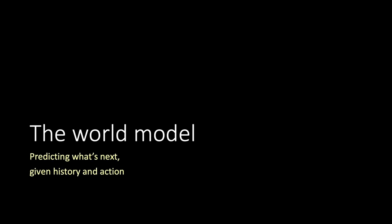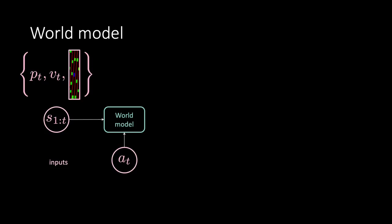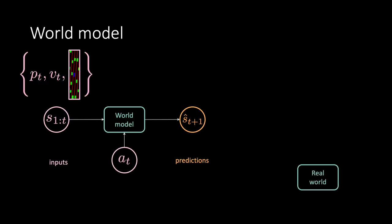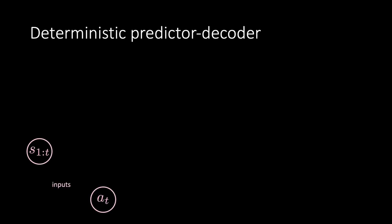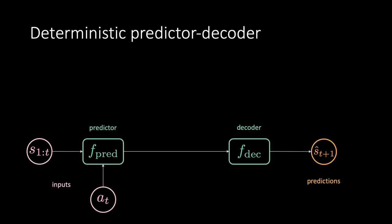Let's see how we train the world model to predict what's next given history and an action. The world model gets as input a sequence of states s1 to t, where each state is represented by a 2D vector pt for position, a 2D vector vt for velocity, and the context image it representing the traffic situation and surrounding lanes. It also gets the action at, perhaps performed by an expert, and tries to tell us what happens next — S-hat t plus 1. On the other side we have the real world with real observations as our targets st plus 1. We start learning the evolution of the future with a deterministic predictive network: states and action are fed to a predictor, then a decoder gives us S-hat t plus 1, and we minimize an MSE loss function.